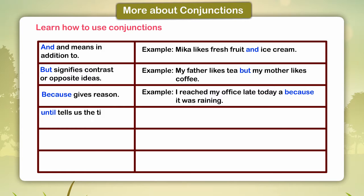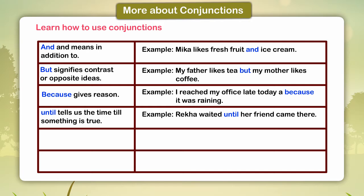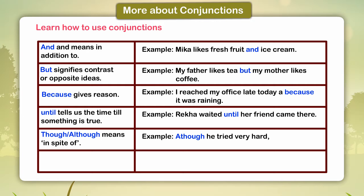'Until' tells us the time till which something is true. Example: Rekha waited until her friend came there. 'Though' and 'although' mean 'in spite of.' Example: Although he tried very hard,